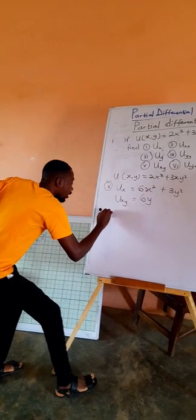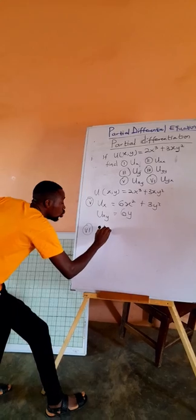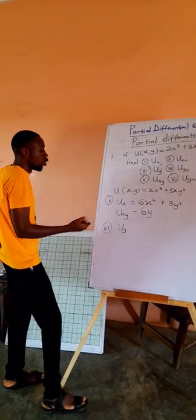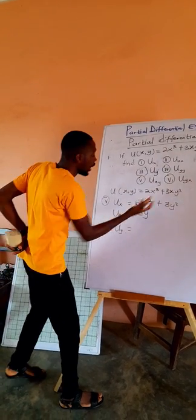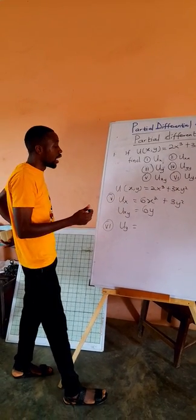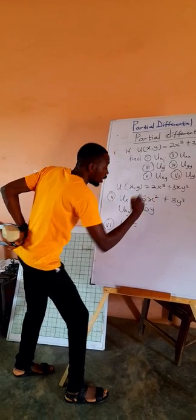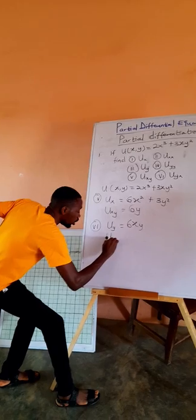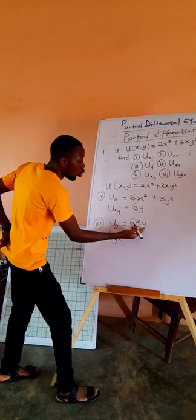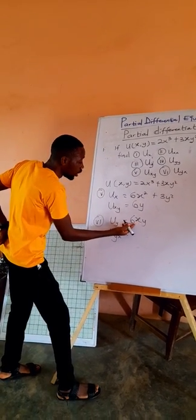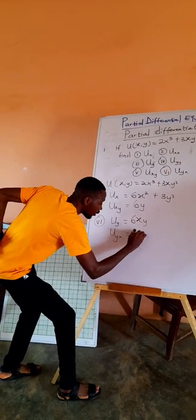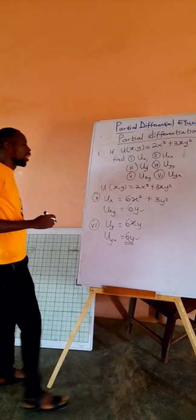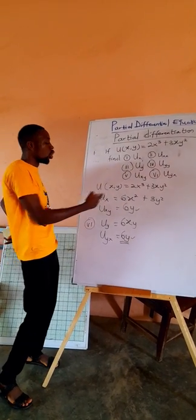Now the last one: ∂²U/∂y∂x — the differentiation of U with respect to y then with respect to x. First we differentiate with respect to y, so x is considered as constant. The first term is 0, the second term gives 6xy, so ∂U/∂y = 6xy. Now differentiating that with respect to x: y is considered as constant, and differentiating 6x gives 6. So ∂²U/∂y∂x = 6. Notice these two mixed derivatives are the same — keep that in mind as it will help us develop a theory.